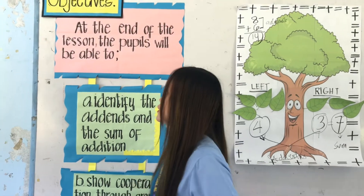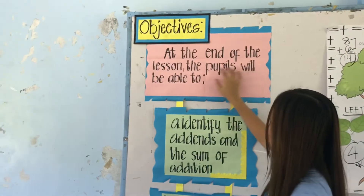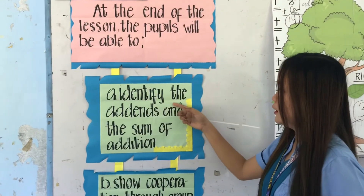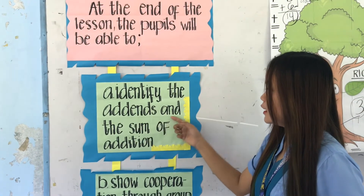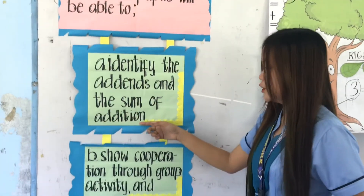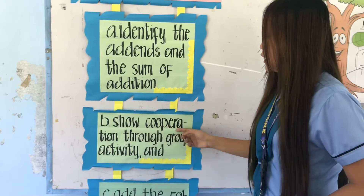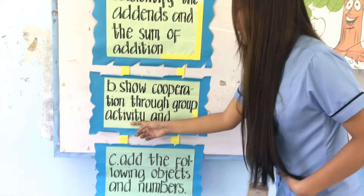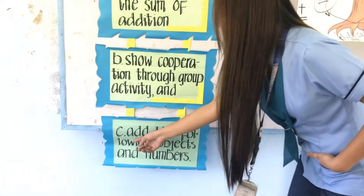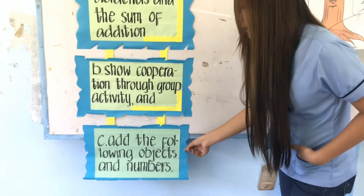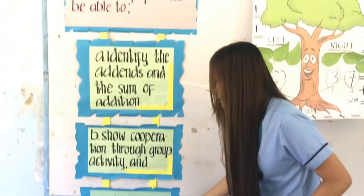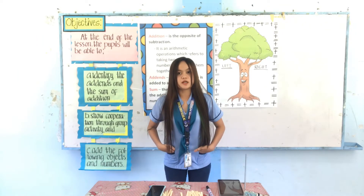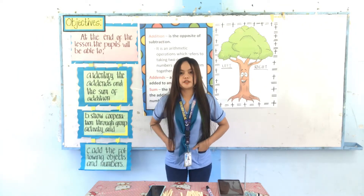So now, let's read our objectives. At the end of the lesson, the pupils will be able to identify the addends and the sum of addition, show cooperation through group activity, and add the following objects and numbers. I have a video representation — please watch and listen carefully.